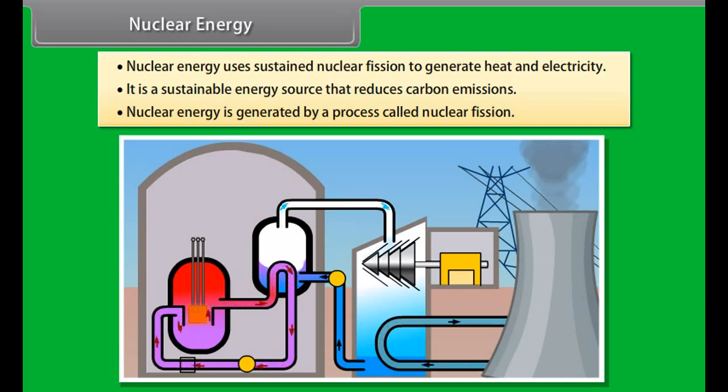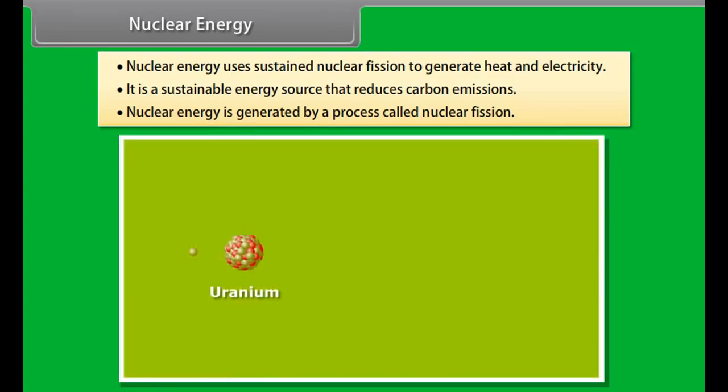After the surface water is sufficiently warm, it is used to boil volatile liquid ammonia. The vapors of ammonia are then used to run a turbine. The cold water is then pumped from the depths of the ocean and is used to condense the ammonia vapor back to the liquid.